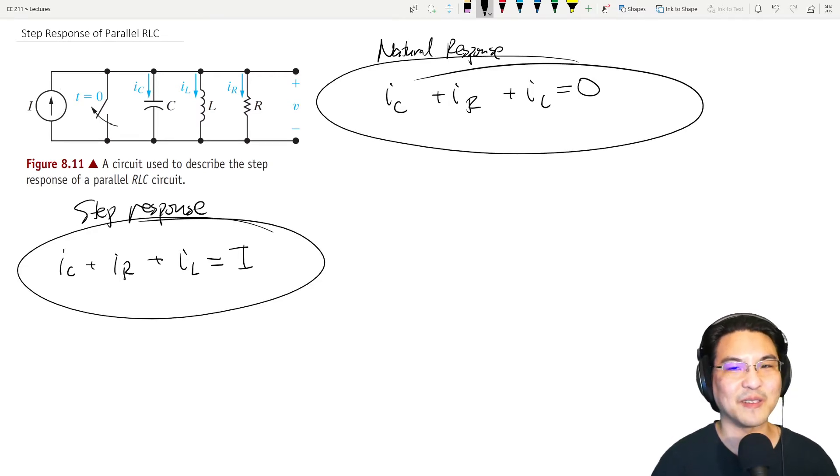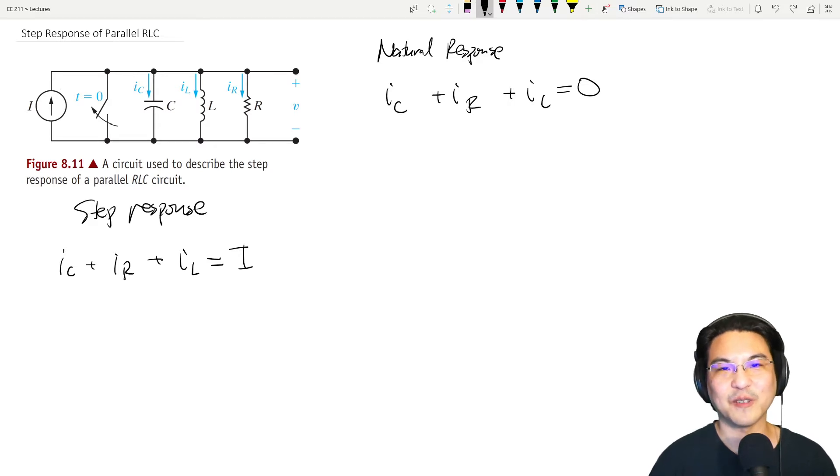So the current for the natural response, KCL, looks like this. For the step response, it looks like this. The only difference right here, that's the only difference.